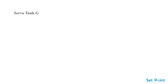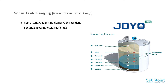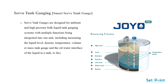Smart servo tank gauges are designed for ambient and high pressure bulk liquid tank gauging systems with multiple functions integrated into one unit, including measuring liquid level, density, temperature, volume or mass. The tank gauge also measures the oil-water interface of the liquid in a tank to facilitate monitoring of tank inventory, custody transfer, inventory reconciliations, and leak detection.